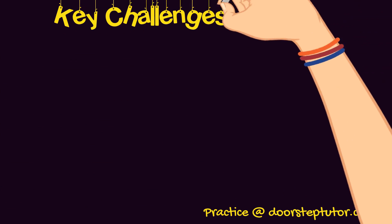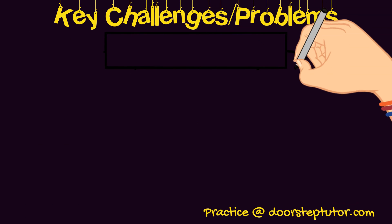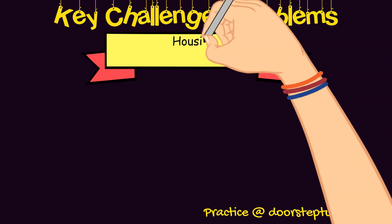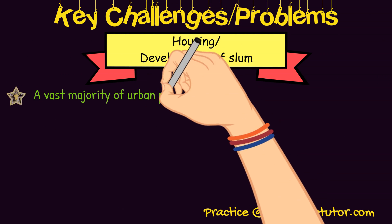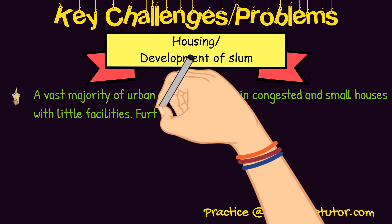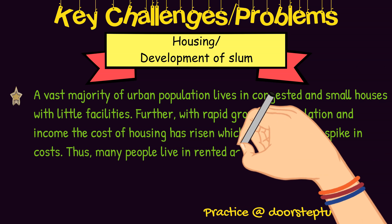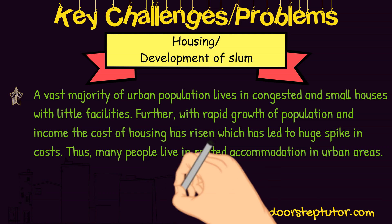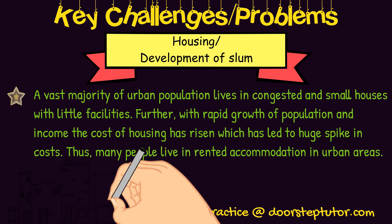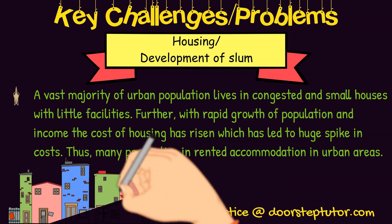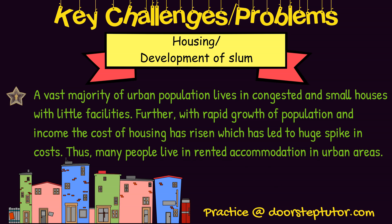Now we will look at key challenges and problems in urban development in India. The first is housing and development of slums. A vast majority of urban population in India lives in congested and small houses with little facilities — they don't have access to clean drinking water, sufficient water for domestic needs, proper ventilation, or proper drainage. With rapid growth of population and the rising cost of living in cities, the cost of housing is also rising, and people are not able to purchase houses, so they live in rented accommodation.